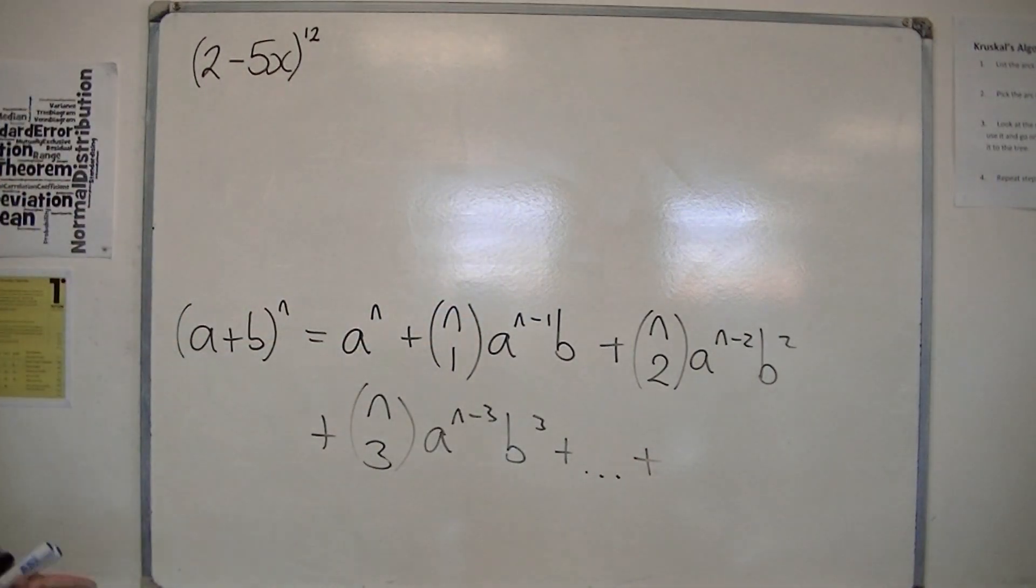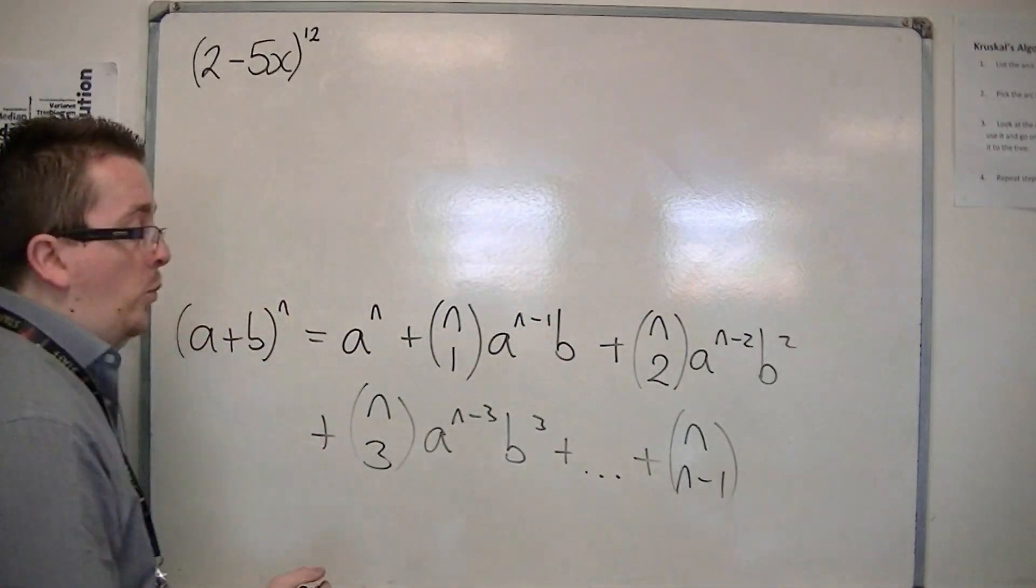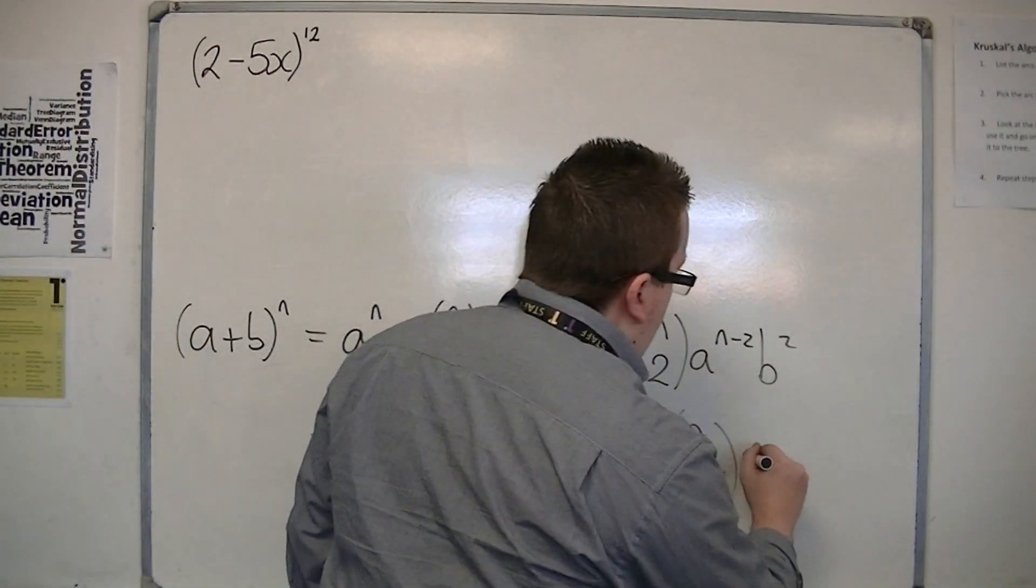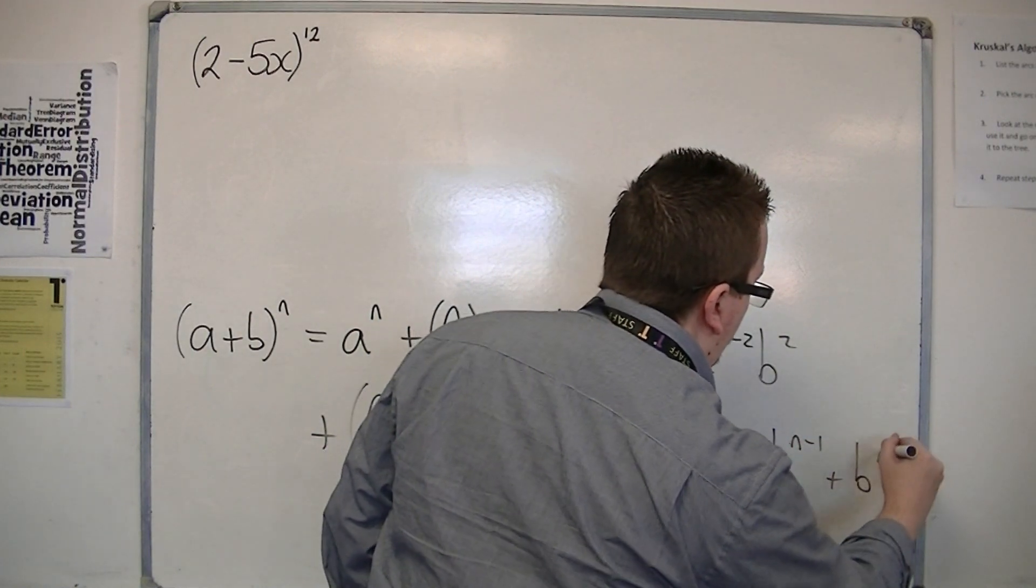Up until you reach $\binom{n}{n-1}ab^{n-1}$ plus $b^n$. And this is the formula that's given to you in the formula booklet for binomial expansion.